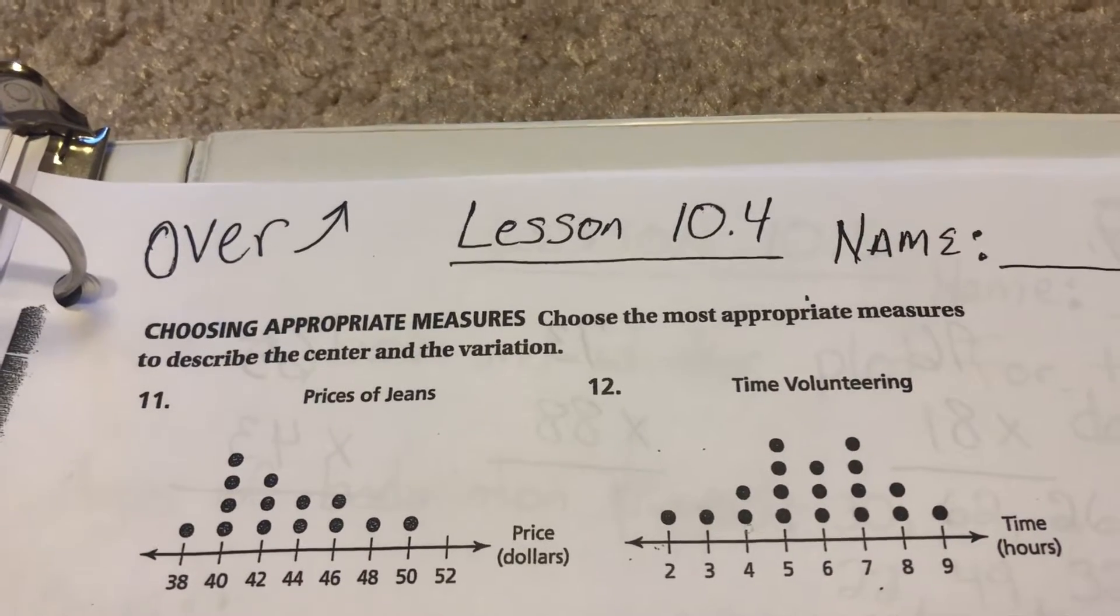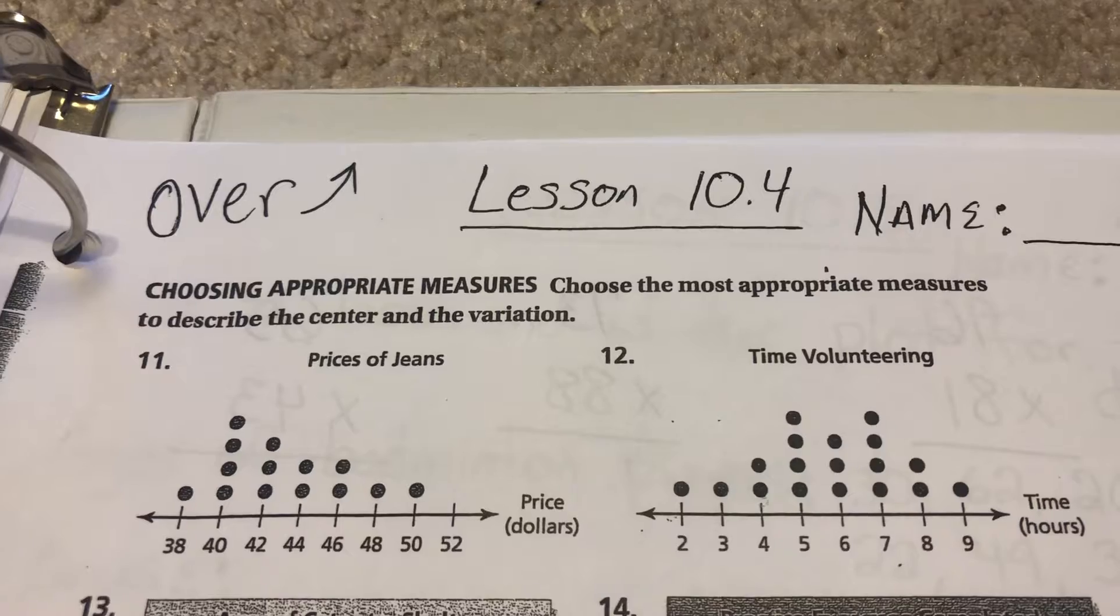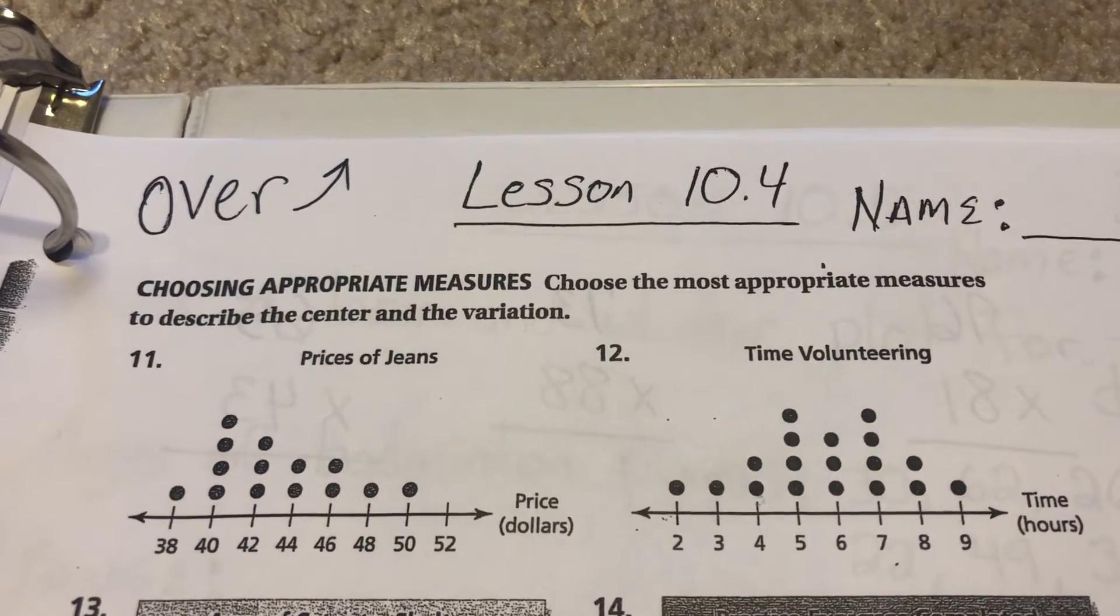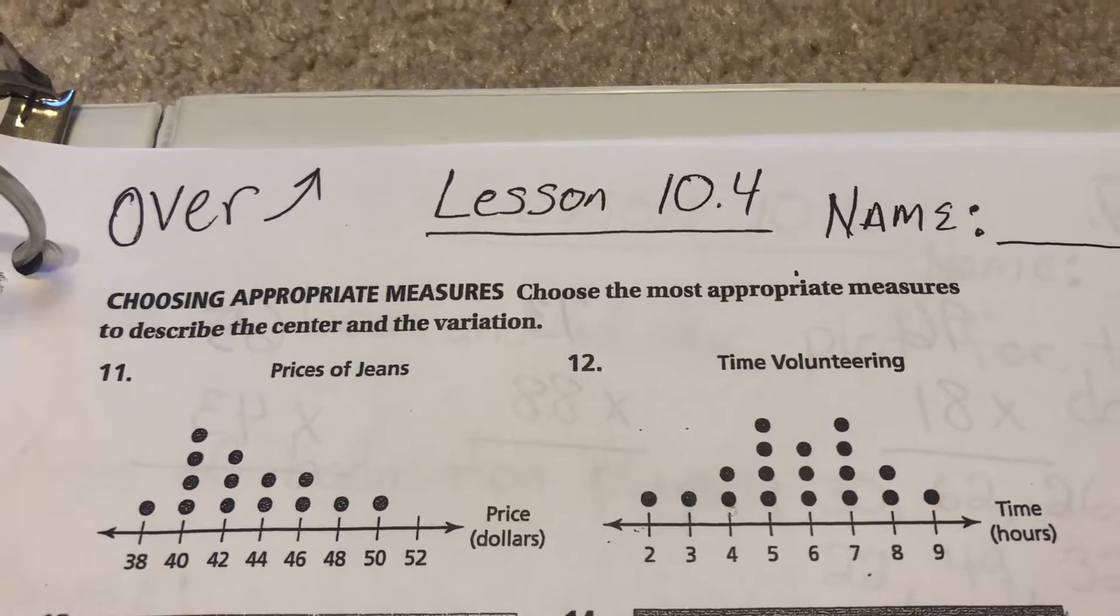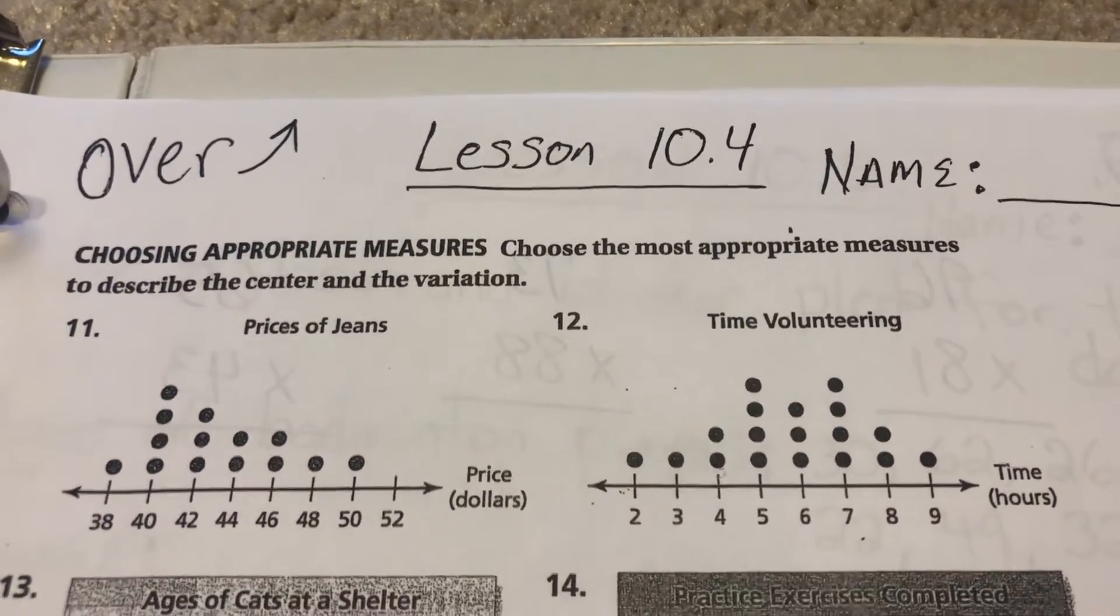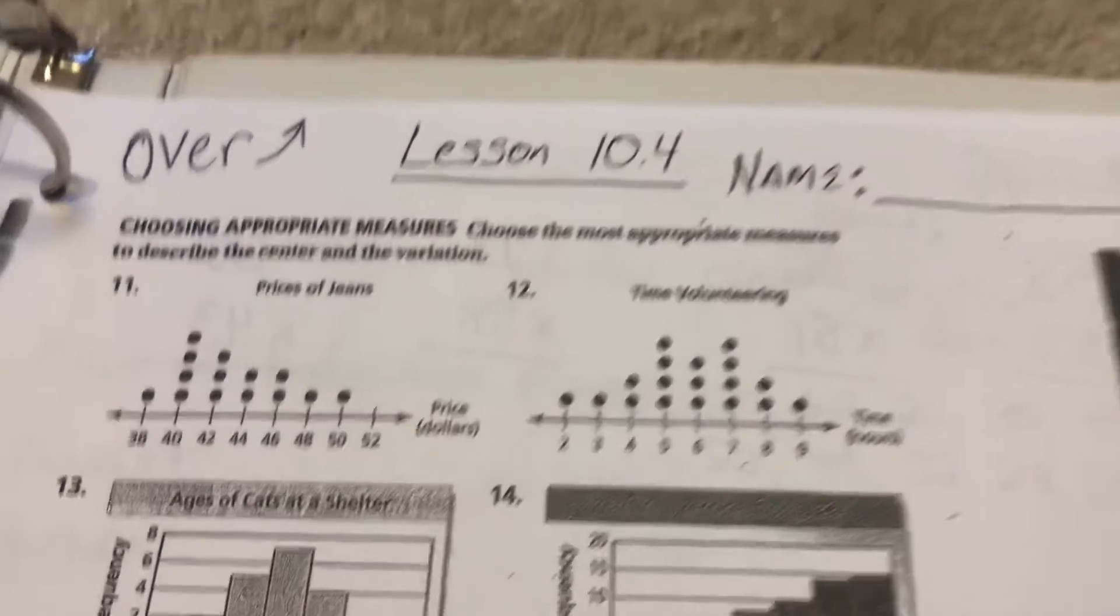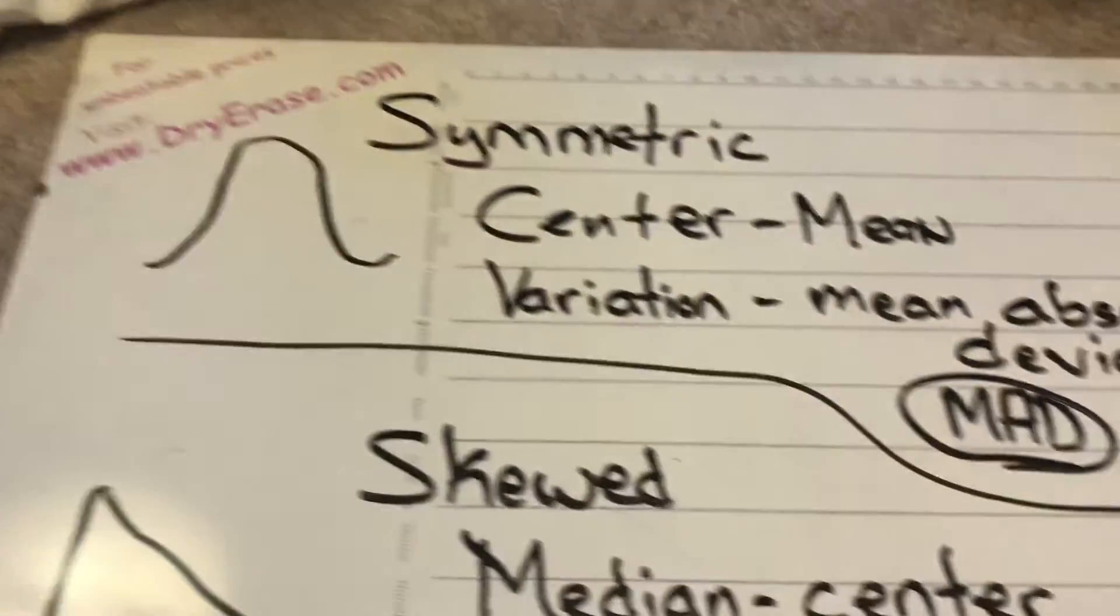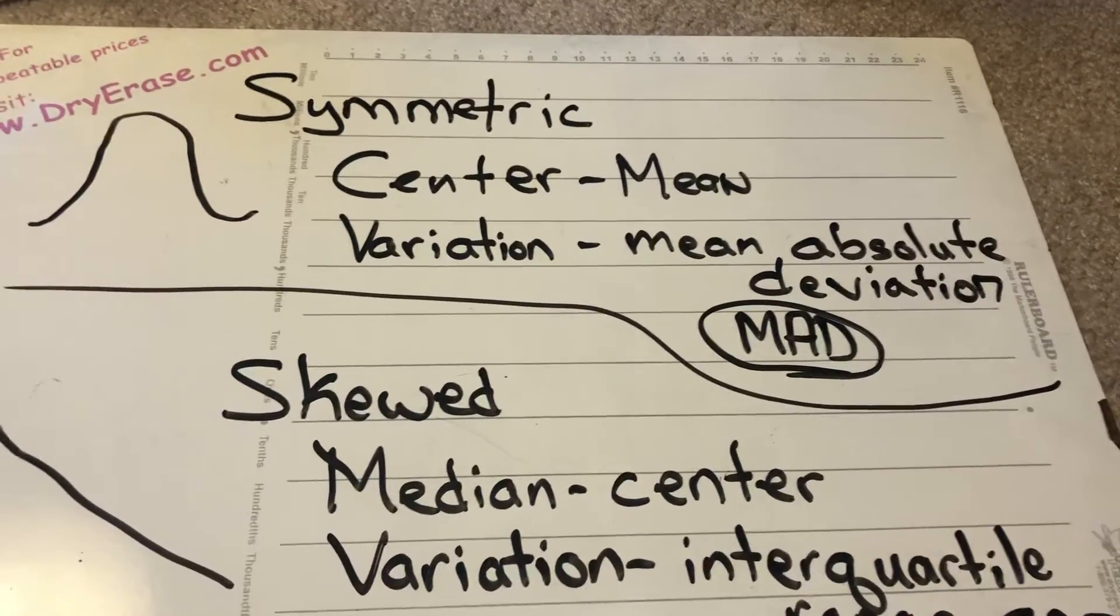We'll see what may be in store after this, but we're looking here, and this talks about choosing appropriate measures. Choose the most appropriate measures to describe the center and the variation. So when we talk about describing the center and the variation, we want to remember, first of all, when we talk about the shape.